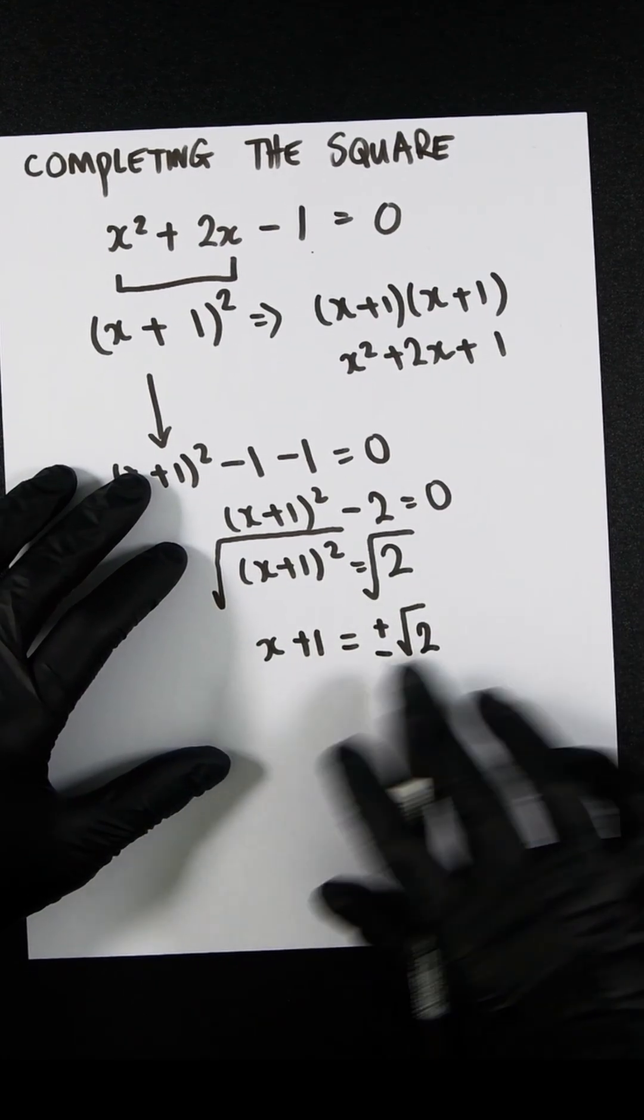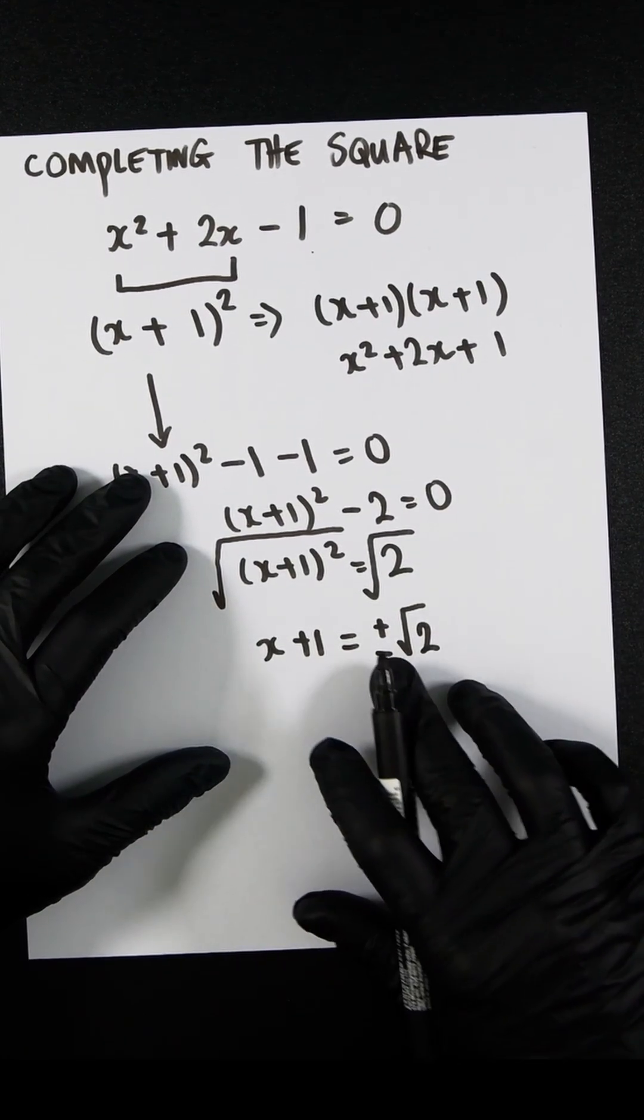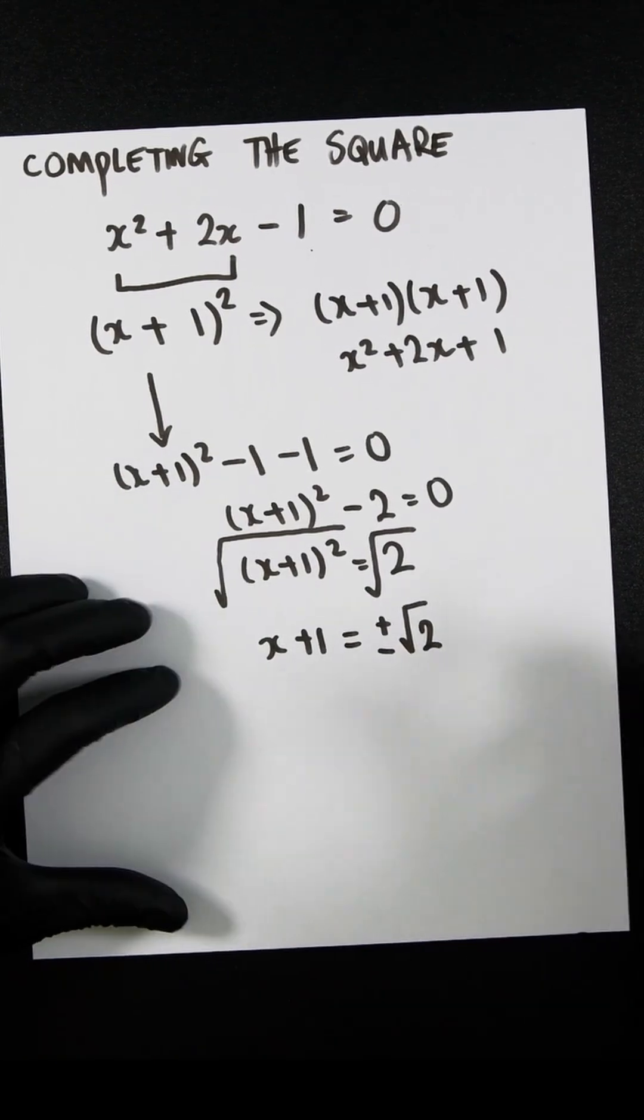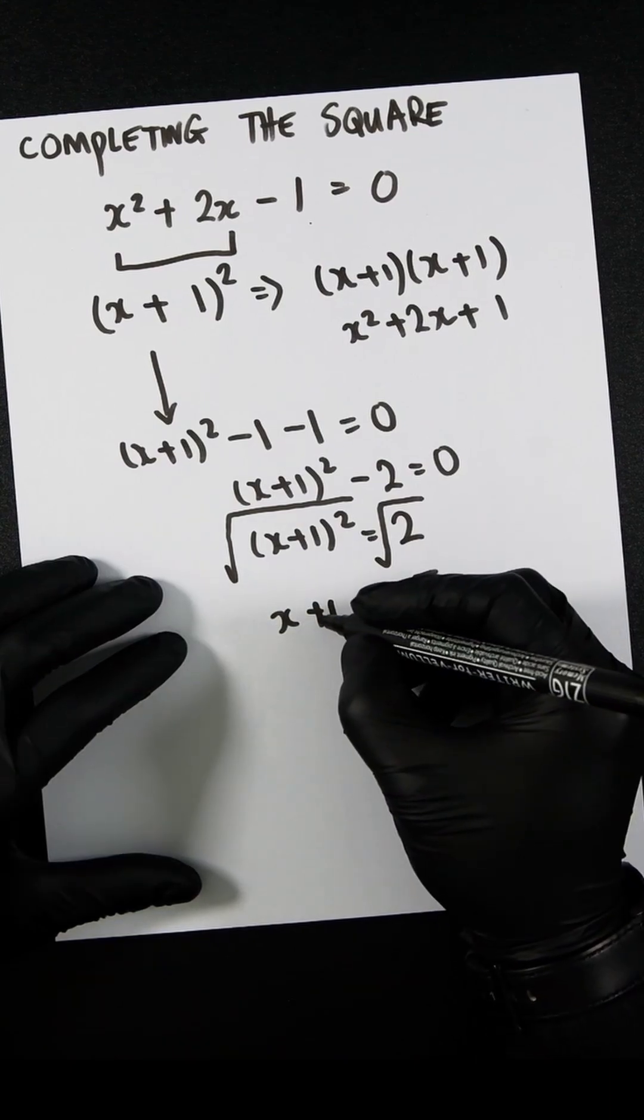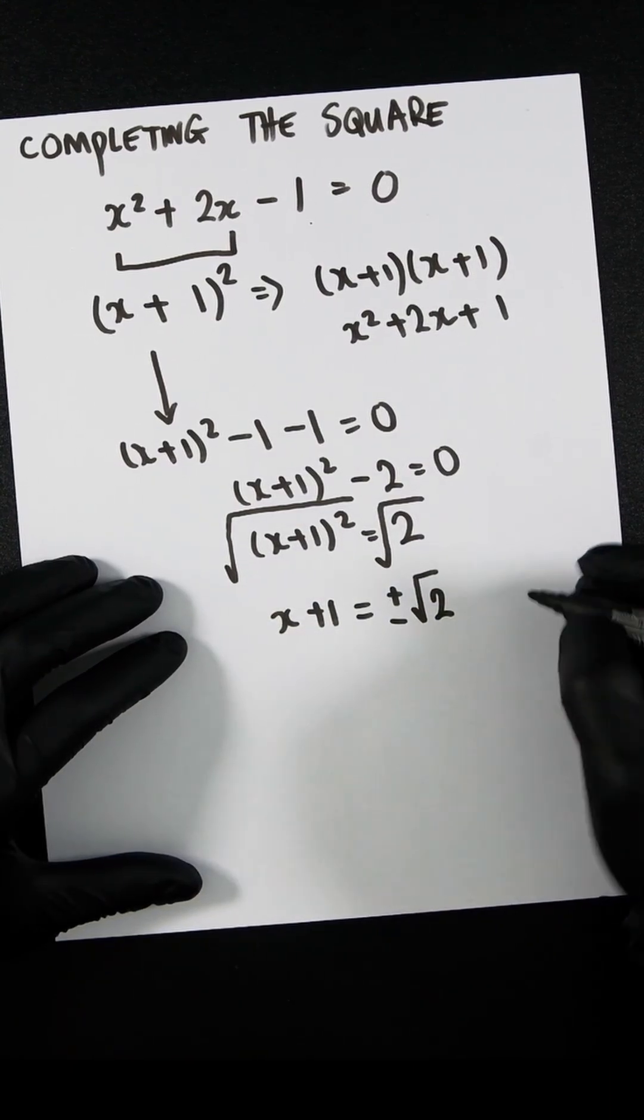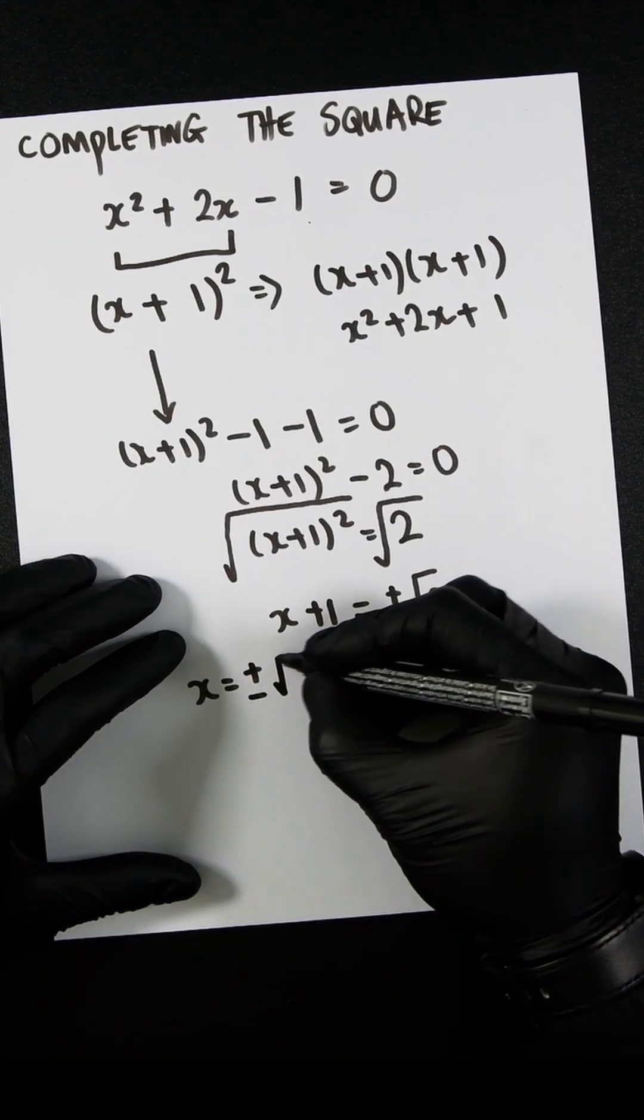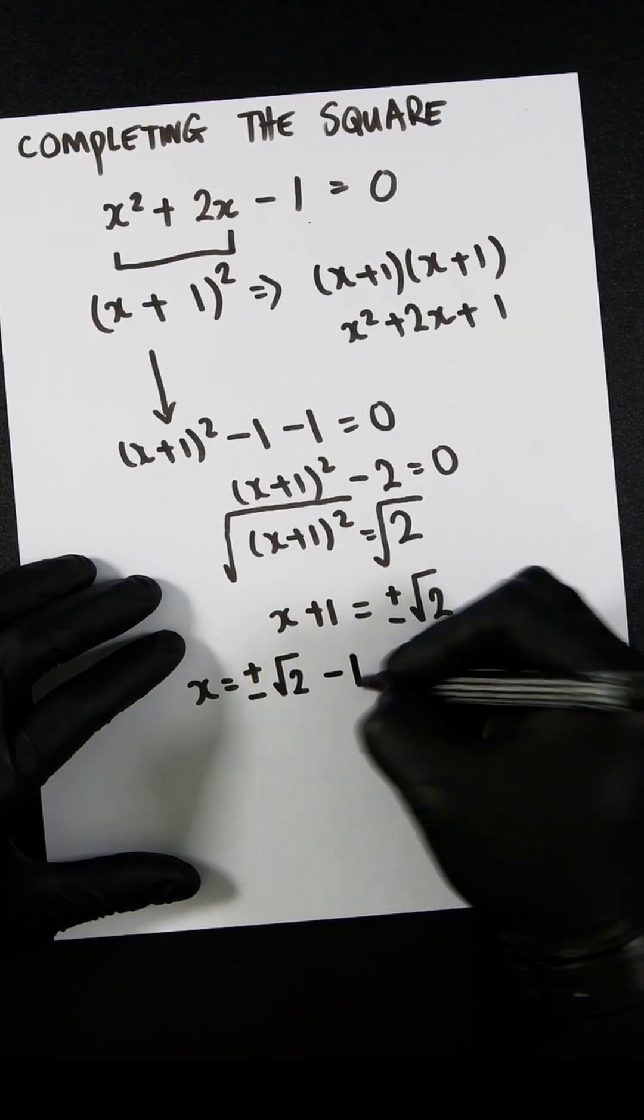That means we will have two solutions for x, one where the root is positive and one where the root is negative. So both solutions, once we've minused one from both sides, would be x = ±√2 - 1.